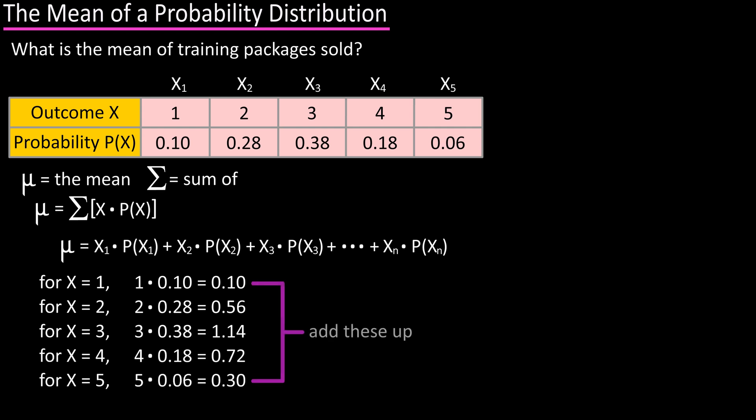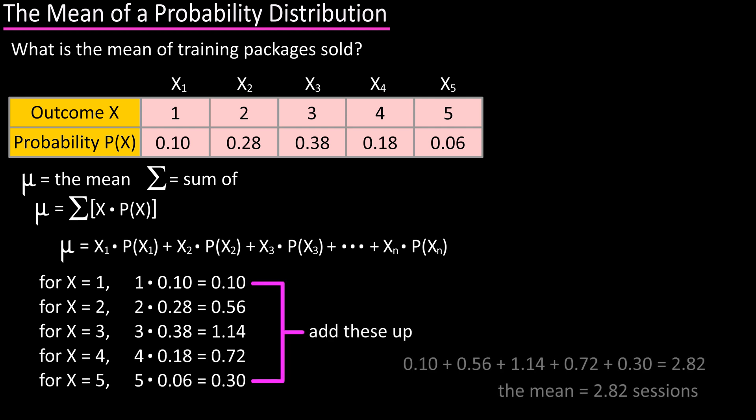Now all we need to do is add these up, and doing so we get 2.82. So the mean number of training sessions sold is 2.82.